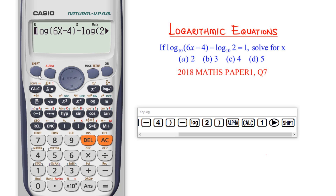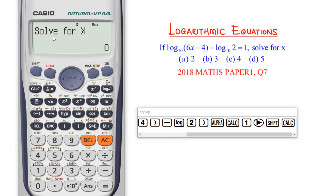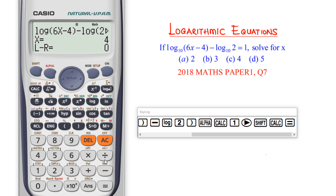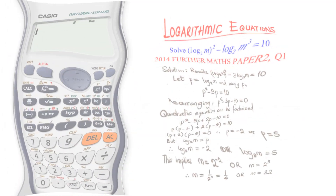As a rule of thumb, always check to ensure no mistakes were made — confirmed, no mistakes. The only thing left is to solve for x using shift CALC. The calculator asks to solve for x starting with an initial value of 0, I press equal to, and the calculator gives the correct answer as 4. So the correct answer to this question is 4, option C.